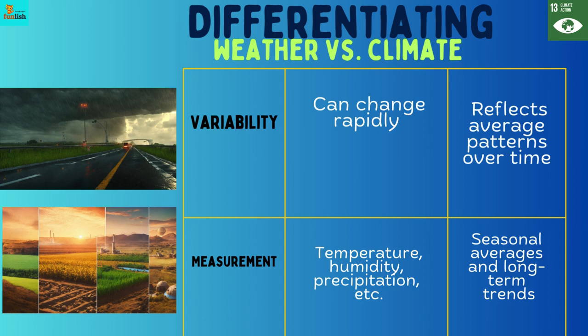Measurement: Weather is measured by temperature, humidity, precipitation, etc. Climate is measured by seasonal averages and long-term trends.